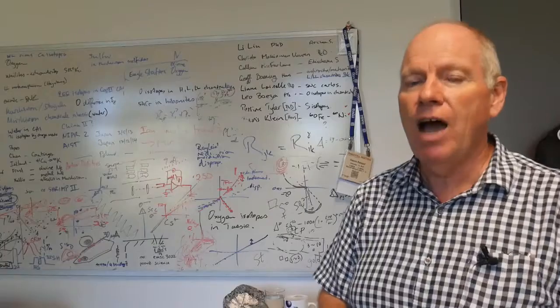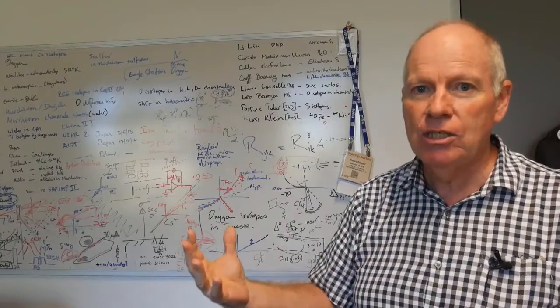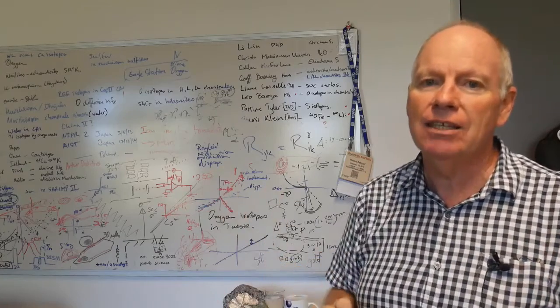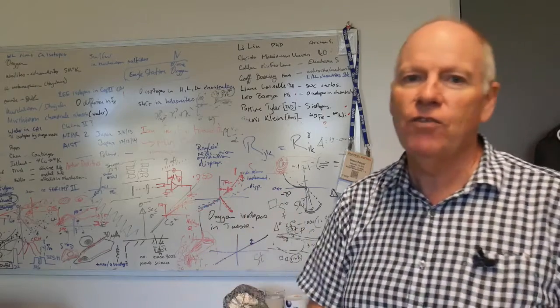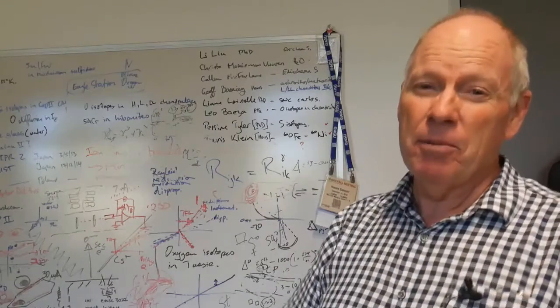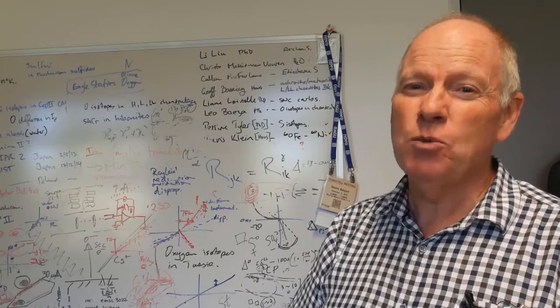Now these abundances of isotopes change during chemical and physical processes. So we get fractionations in these isotopes, and we can look at those fractionations to see how evaporation and so forth works.